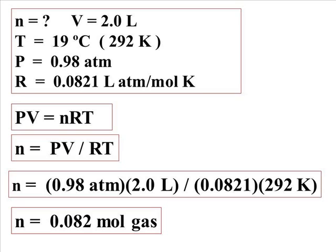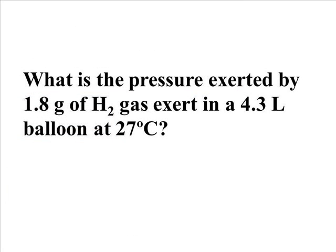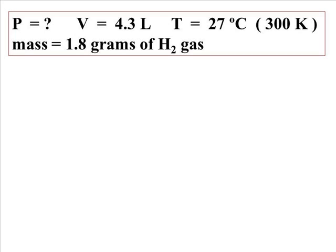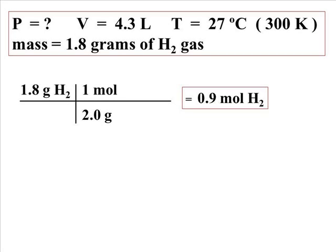If you knew the identity of that gas, you then could convert it to grams of that gas. Let's work another problem. What is the pressure exerted by 1.8 grams of hydrogen gas if it is in a 4.3 liter balloon at 27 degrees Celsius? Setting up our variables and looking for what we are trying to solve for. We are trying to solve for pressure. We first need to convert our grams of hydrogen into moles of hydrogen, because the ideal gas law says moles, not grams, of gas.